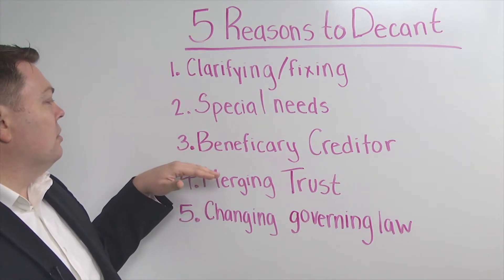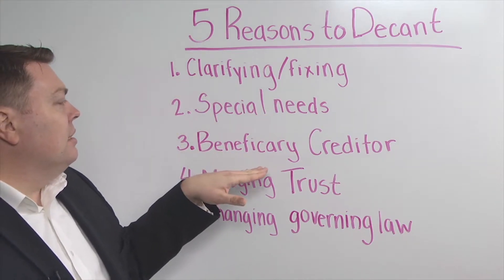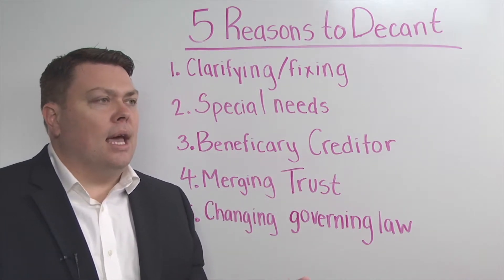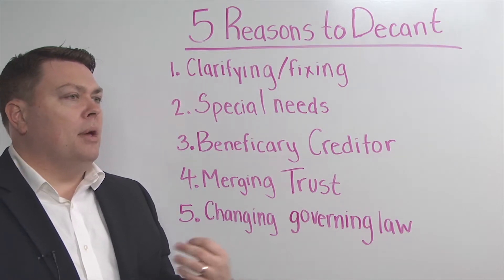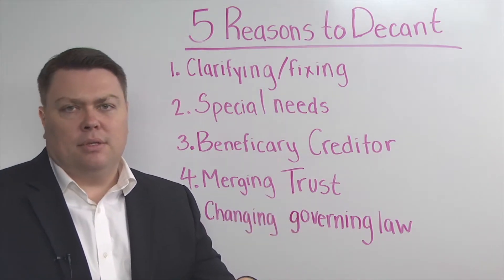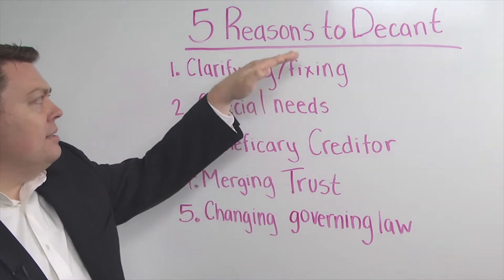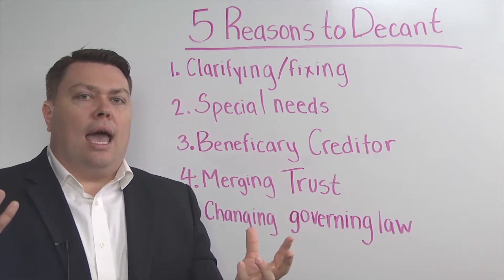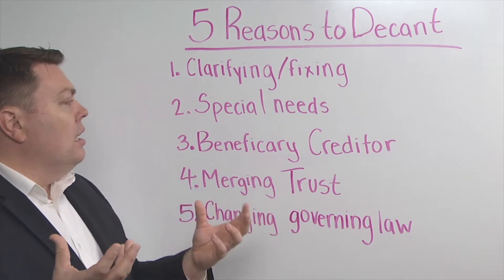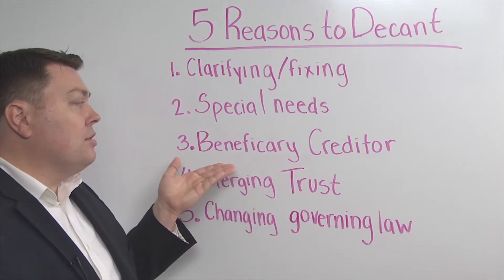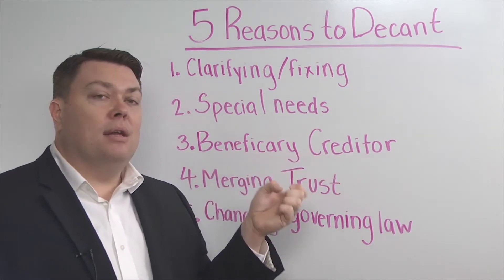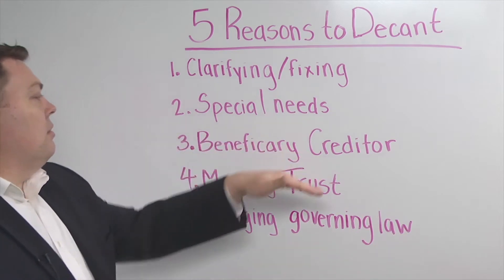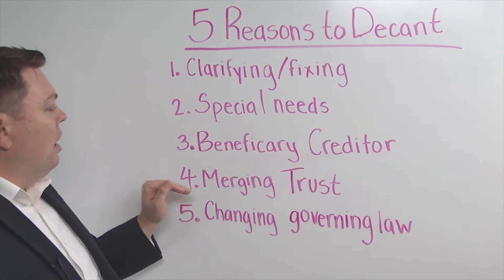The third opportunity to decant a trust would be to protect assets from creditors of a beneficiary. Let's say there is a spendthrift beneficiary, or a beneficiary who is in bankruptcy. If you have decanting terms in your trust, the trustee can take the assets in that old trust and pour them into a new trust with terms that will protect that beneficiary's assets from their creditors. That's the third reason why you might want to decant a trust.